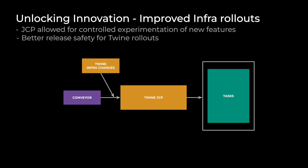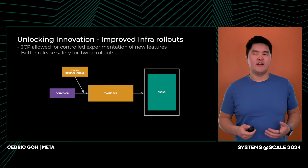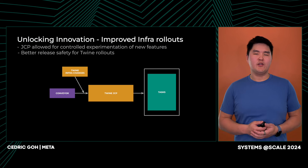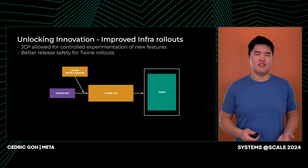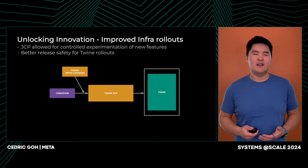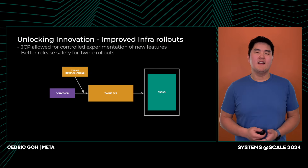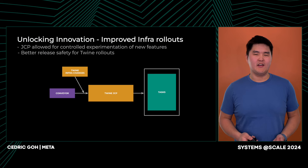In addition to solving accumulated problems, the JCP also allowed Twine to experiment with new features in a more controlled manner. For example, one such improvement is in how we conduct internal rollouts. Previously, changes to internal Twine components such as the agent could not be released with full coordination with all service owners due to the scale at which we operate. However, now that the JCP had direct access to Conveyor's managed push intent, we were able to align our rollouts with these managed pushes and leverage the guardrails that Conveyor offers, such as service health checks, greatly improving the reliability of our rollouts.